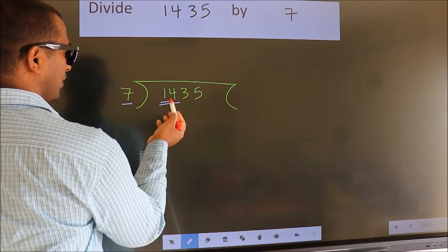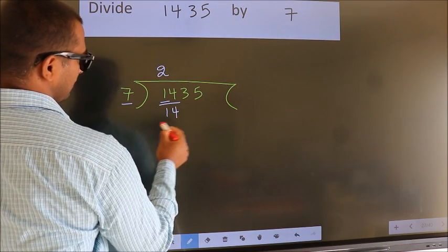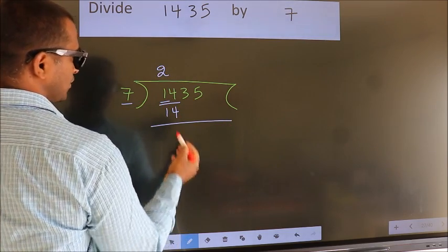When do we get 14? In 7 table. 7 2s 14. Now, we should subtract.